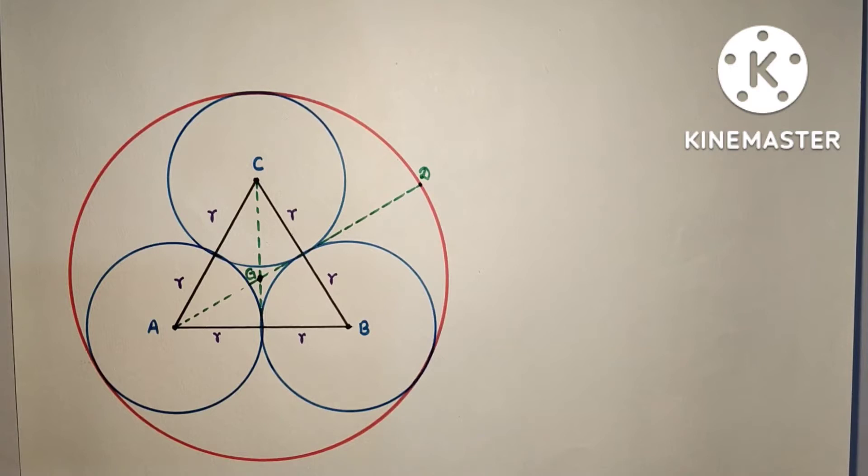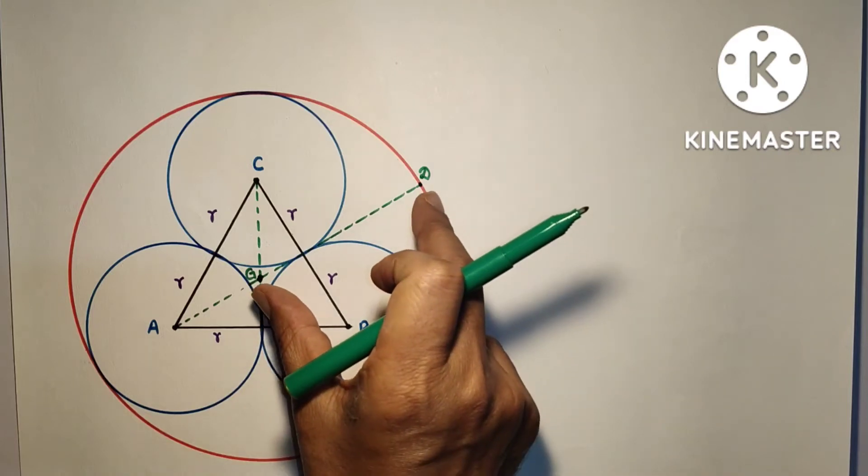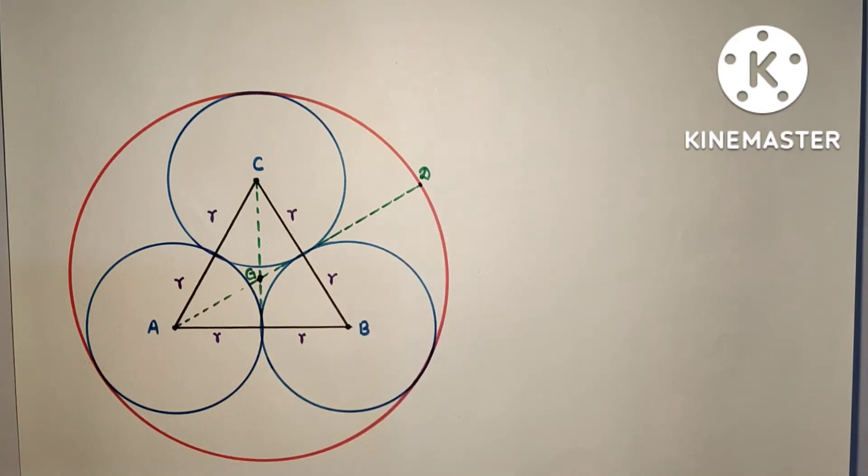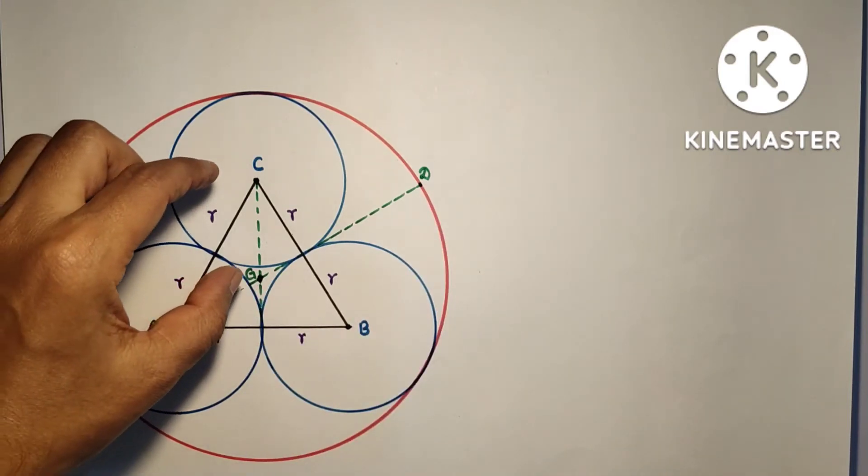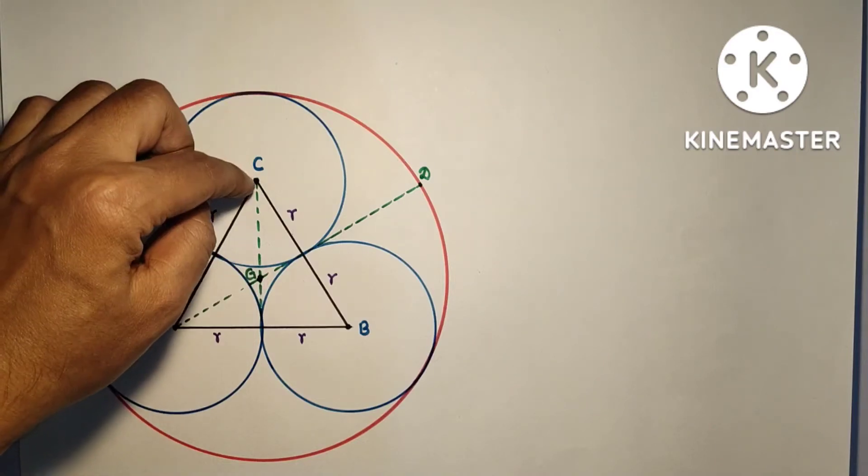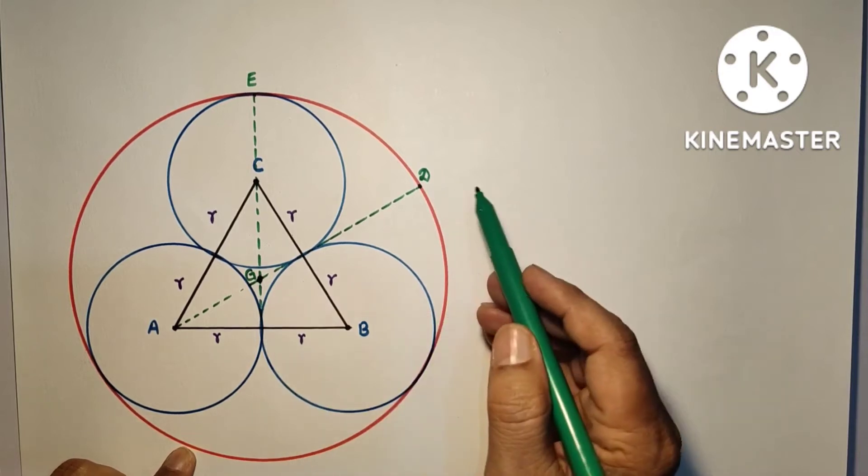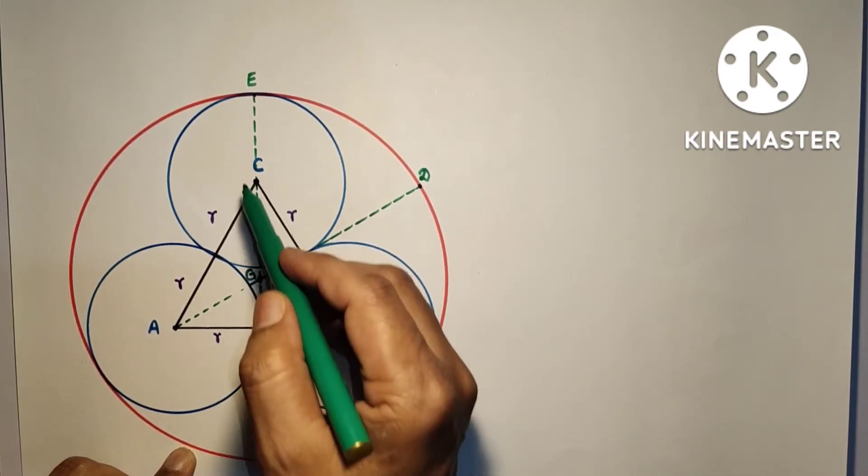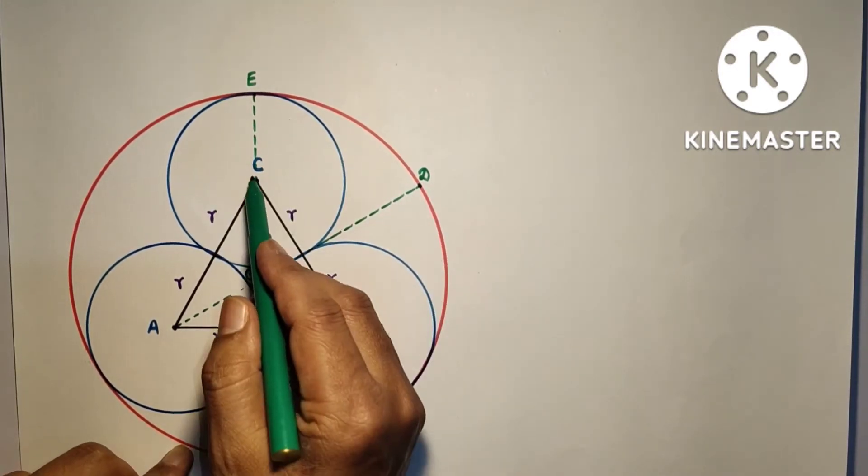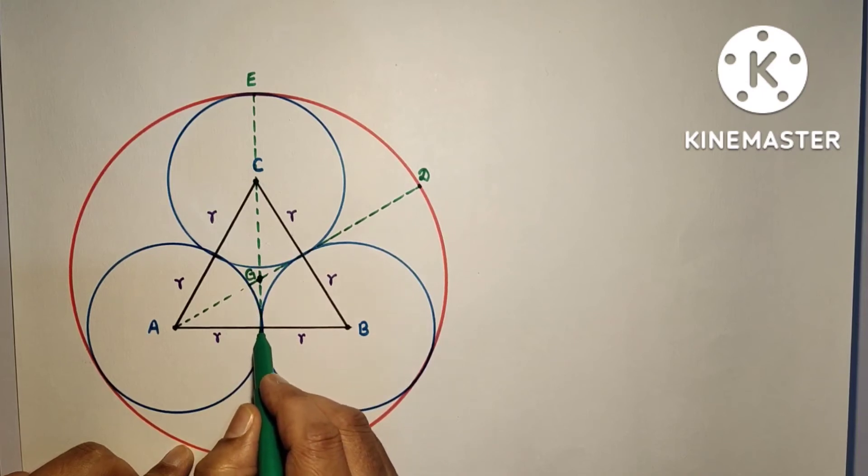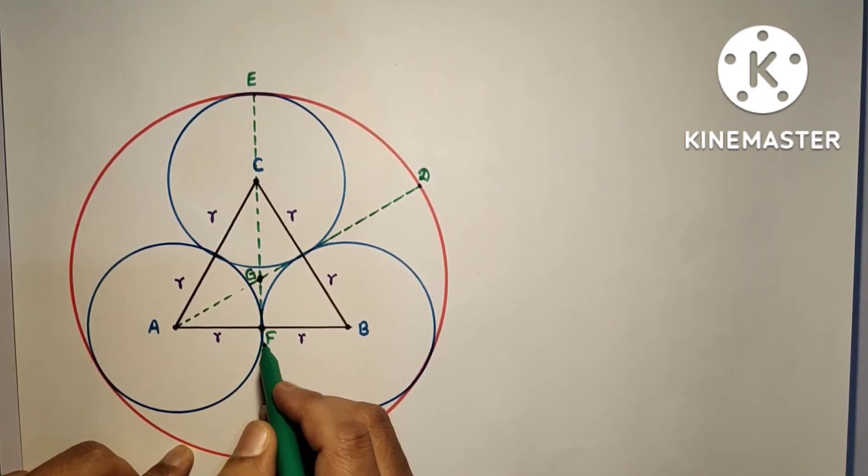So we have to find the radius of the bigger circle, that pink circle. Radius is GD. We can find it by finding GC and then from this point to this point that is R. So radius is this GD, and that radius is GC plus CE.